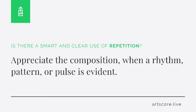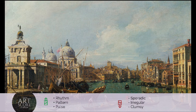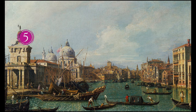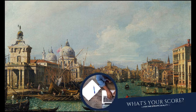Repetition. Is there a smart and clear use of repetition? Appreciate the composition when a rhythm, pattern, or pulse is evident. But when the elements are arranged in an irregular or clumsy way, lower your score. I scored the work a 5. I feel the elements in the work have some sense of repetition. What's your score?